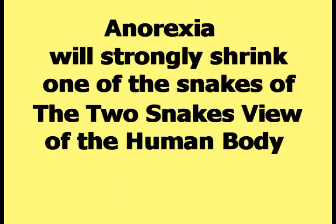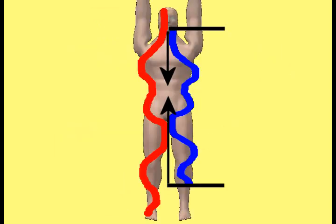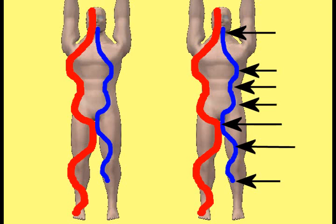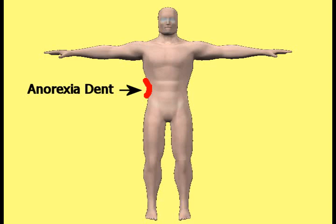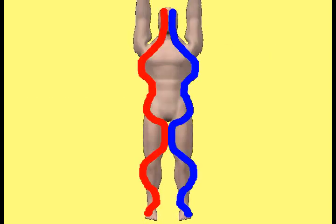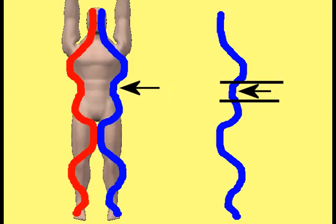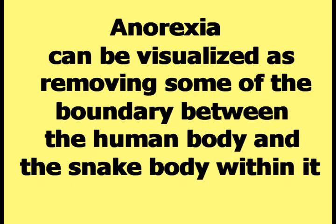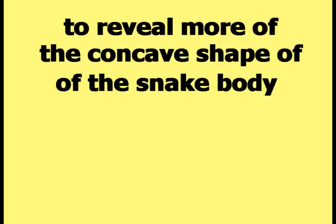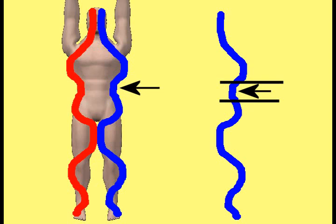According to Happy Theory, anorexia will strongly shrink one of the snakes of the two snakes' view. The shrinkage will pull both ends of the snake towards the vertical center of the human body, as well as pulling the wave shapes of the snake body in towards the spine. The reason anorexia dent occurs where it does is that the wave shape of the snake body is naturally concave or rounded inwards in the area between the ribcage and the pelvis. Anorexia can be visualized as removing some of the boundary between the human body and the snake body to reveal more of that concave shape.